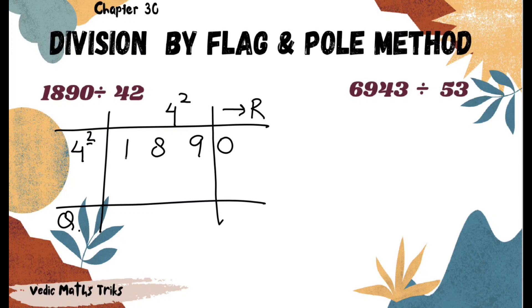First, we divide 1 by 4 — 1 is too small, so we take two digits: 18. Dividing 18 by 4, we get 4 (since 4×4=16), giving a remainder of 2. We write this remainder 2 alongside the next digit 9, making 29. Now we multiply the quotient digit 4 by the flag 2: 4×2=8, and subtract 8 from 29.